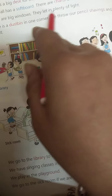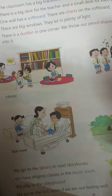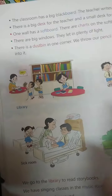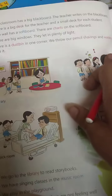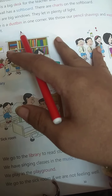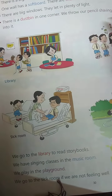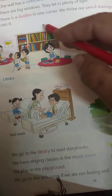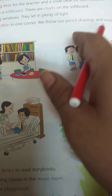Next, the big window. Windows let in plenty of light. Usually, a window in your classroom provides light during the daytime. Next, the dustbin — everything wasted, like pencil shavings and waste paper, you throw into the dustbin.